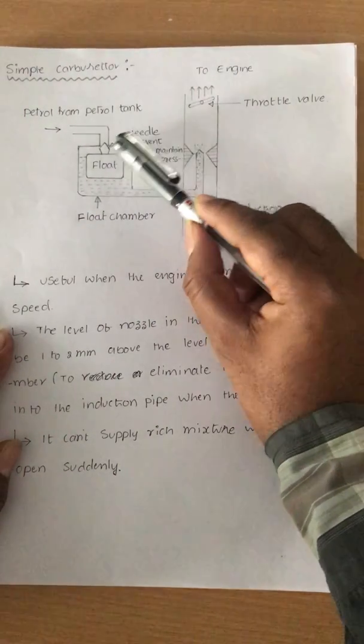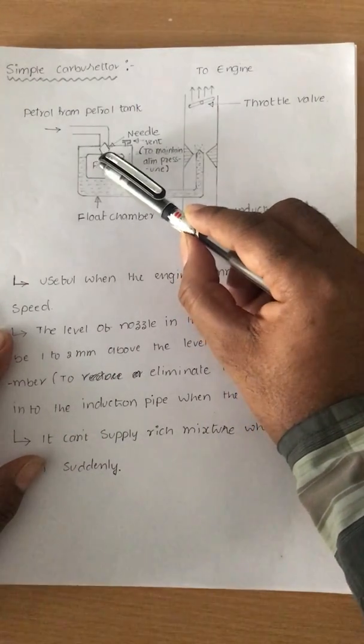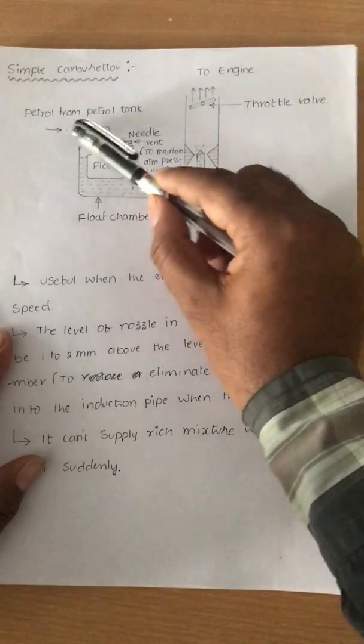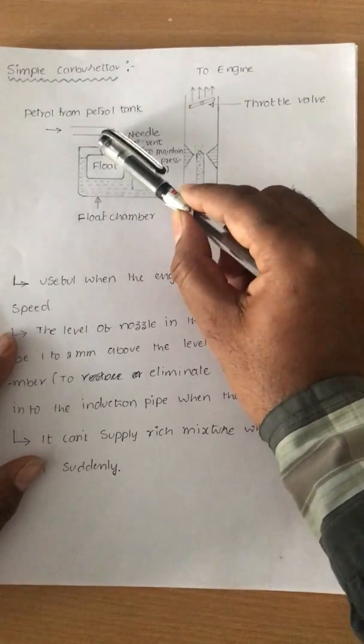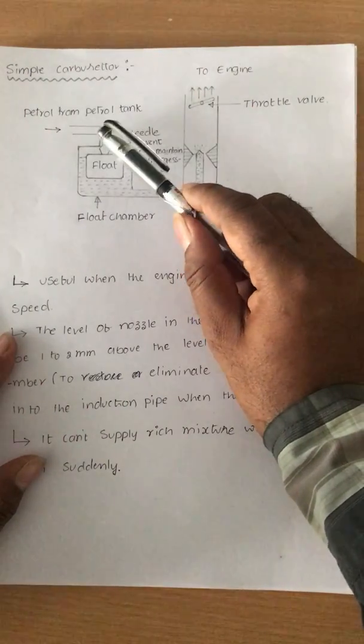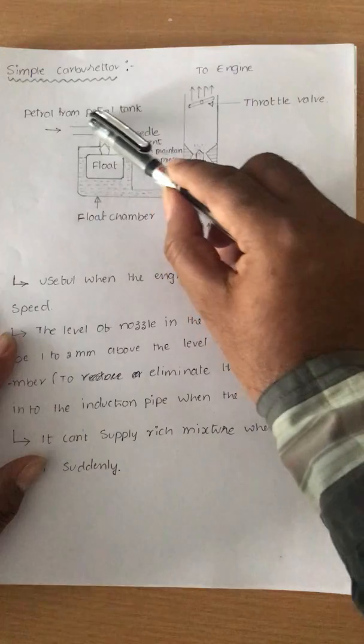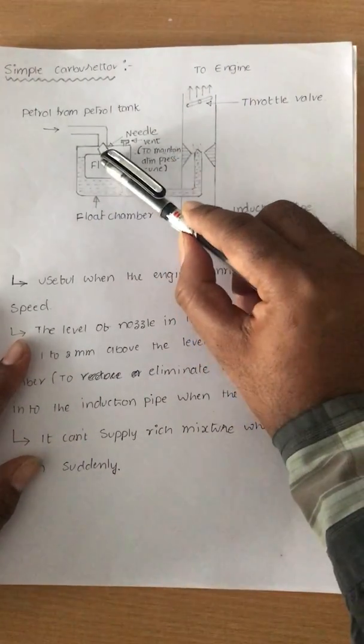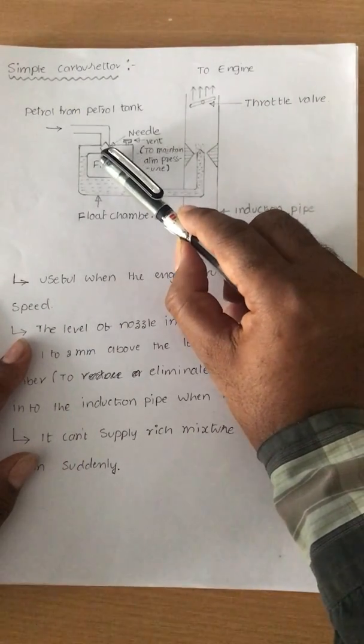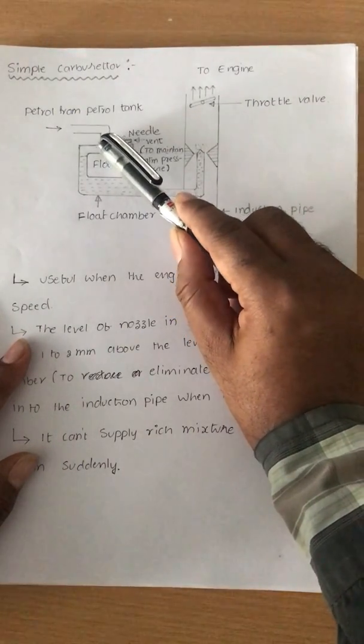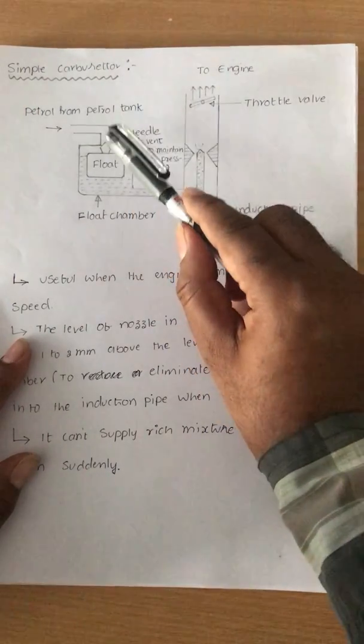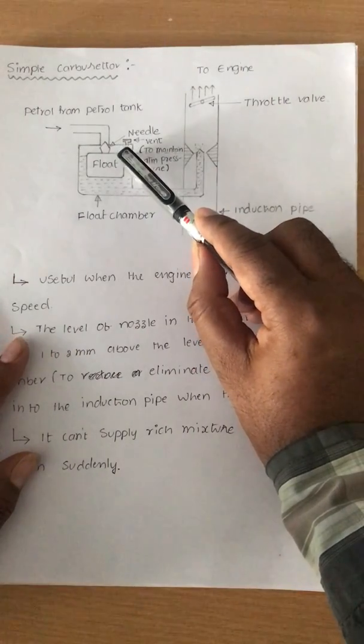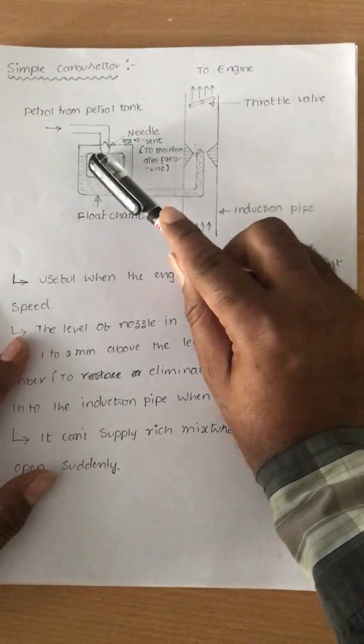The needle is connected to the float. When the float moves downward, the needle also moves downward, opening the intake pipe so fuel from the petrol tank enters. Once the level reaches the desired level, the float moves upward. When the float moves upward, the needle closes the intake pipe, stopping the petrol. This is how the level is maintained constant all the time. That is the purpose of the needle and float.